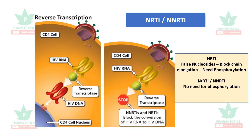NRTIs are false nucleotides that block chain elongation and require phosphorylation for activation. There is only one nucleotide reverse transcriptase inhibitor — tenofovir — which does not require phosphorylation for activation.